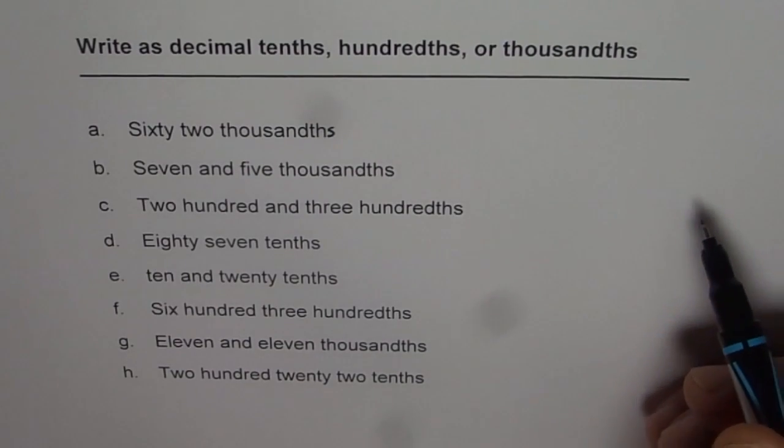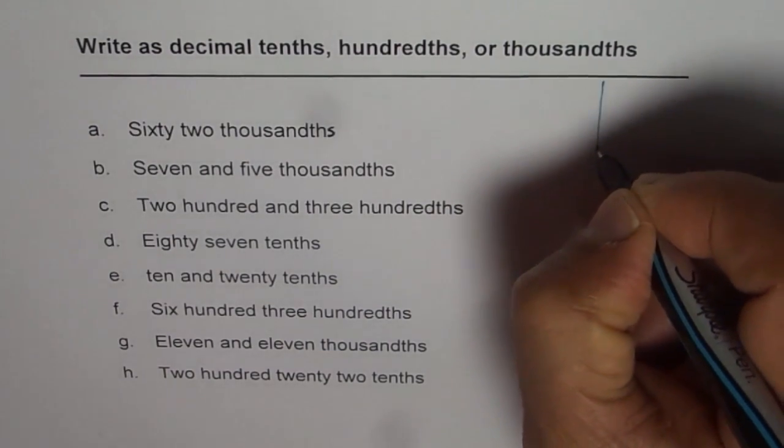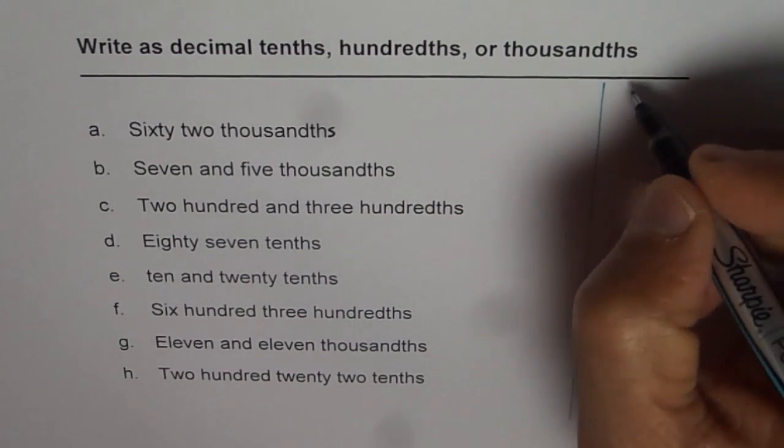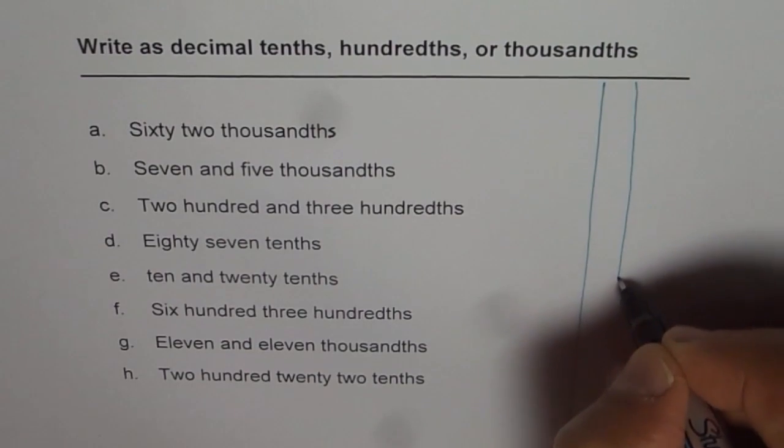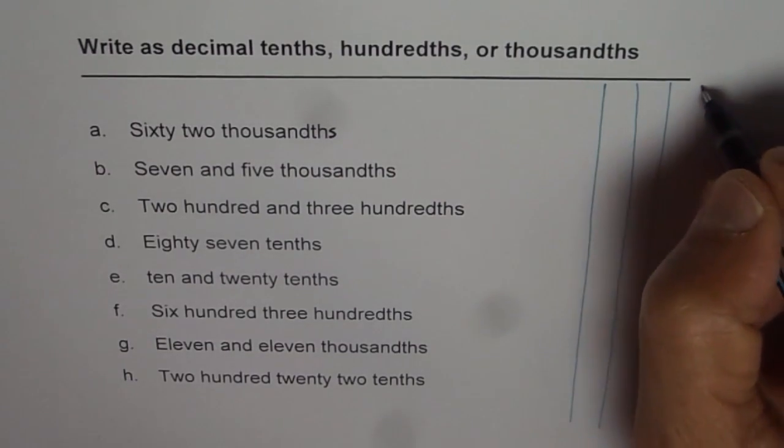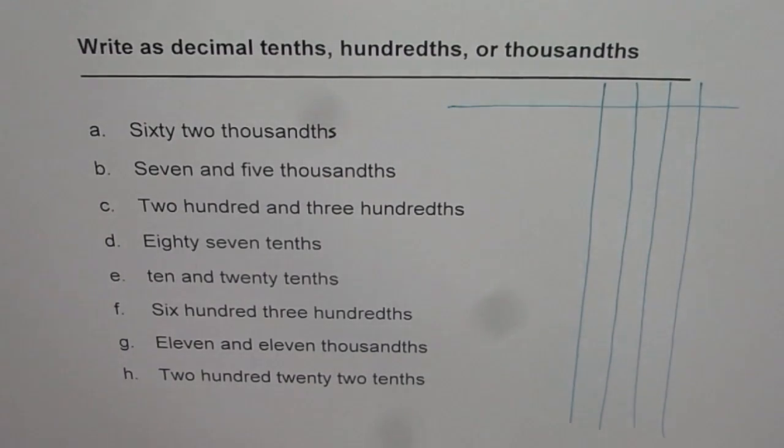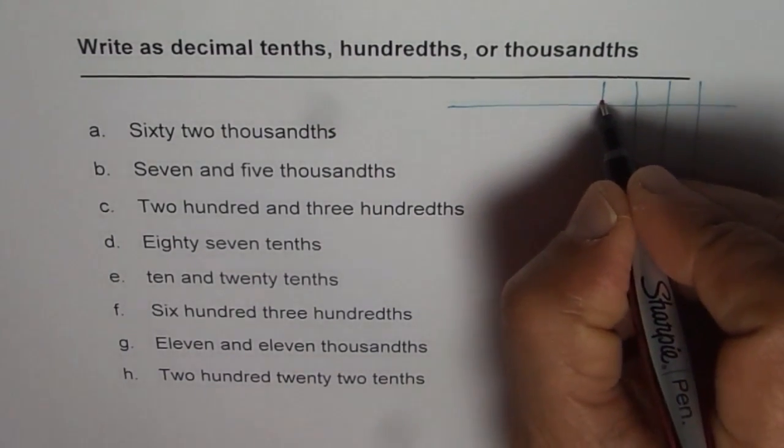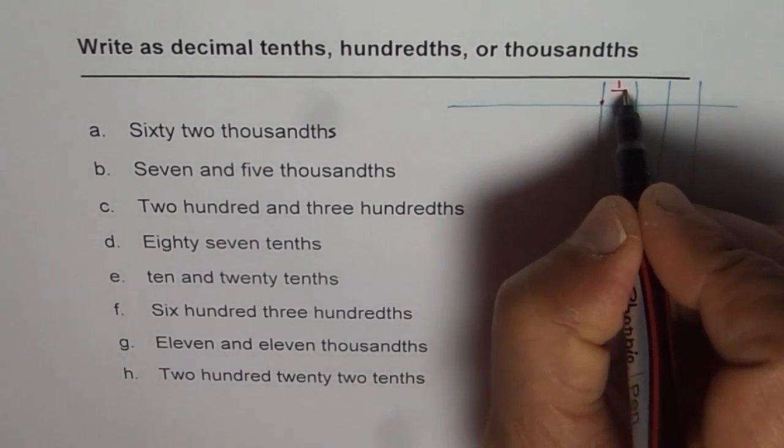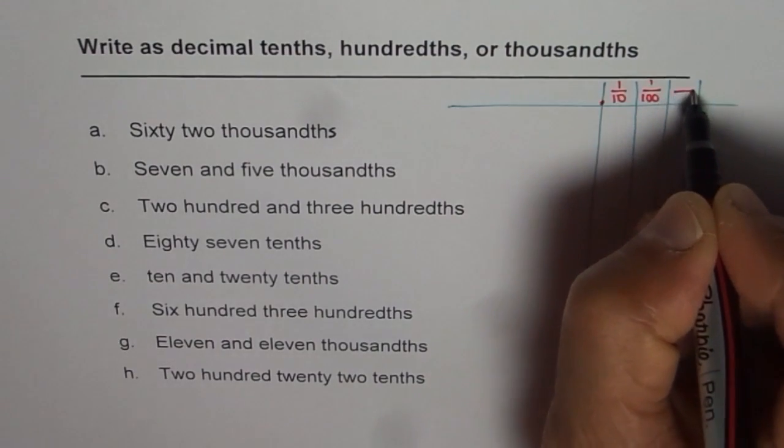To help us write, we will make a place value chart. So let's say that line indicates decimal point. On the right side we have tenths and then we have hundredths and then we have thousandths. So on this place value chart we'll call this as a decimal and here we have tenths and then we have hundredths and thousandths.